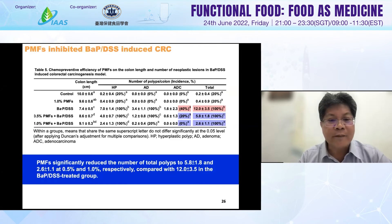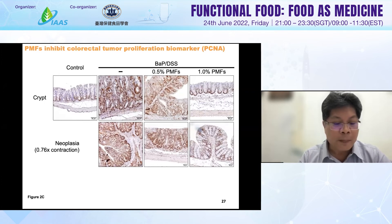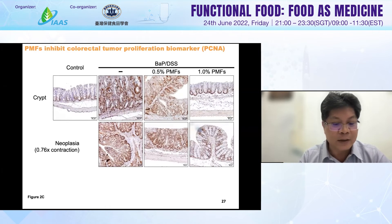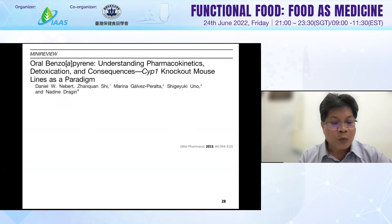PMF significantly reduced the number of total polyps compared with PMF-untreated groups. IHC results show PCNA, a typical cell proliferation biomarker, where intensity in both crypts and neoplastic tissue was decreased in mice treated with PMF compared with the BAP+DSS group. Together, these results suggest that oral administration of PMF can prevent BAP+DSS-induced colorectal tumorigenesis.